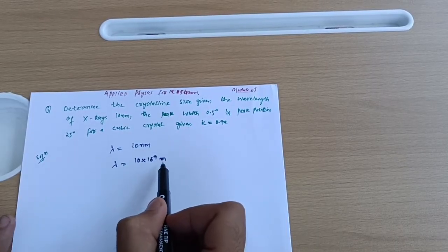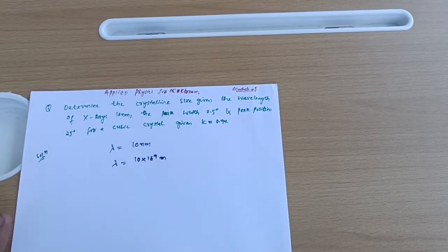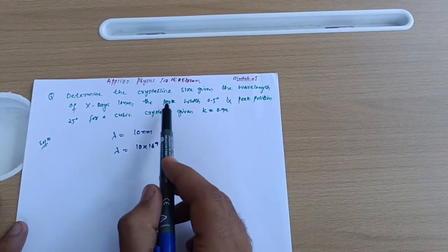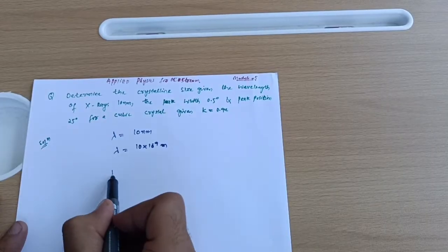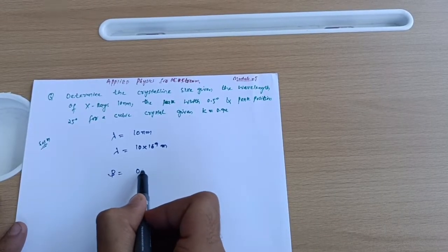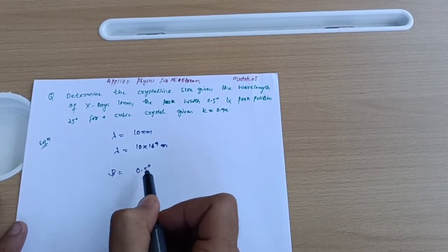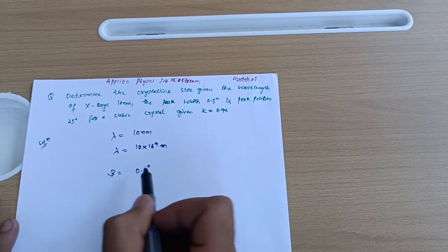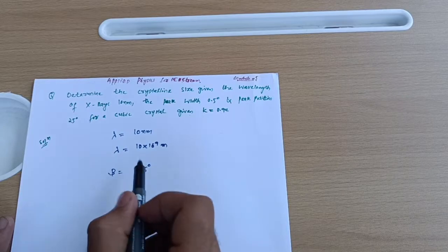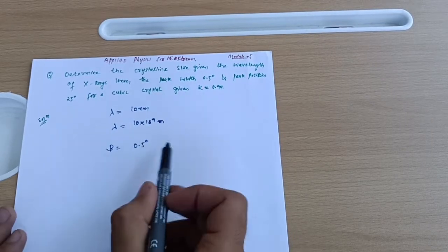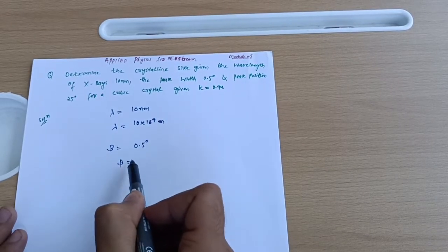Now, peak width equals 0.5 degrees. Peak width is denoted by beta (β), so β = 0.5°. But keep one thing in mind: you have to take beta in terms of radians.